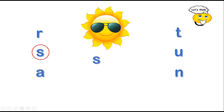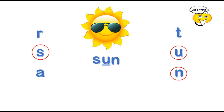S is here. The second letter is missing. N is here. What is the second letter? Let's think. U. What's the word? Sun.